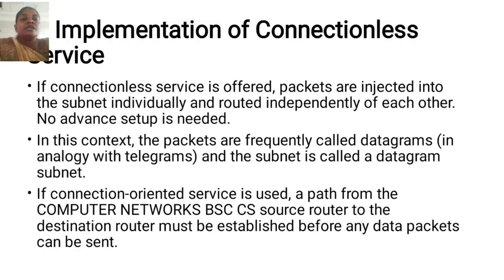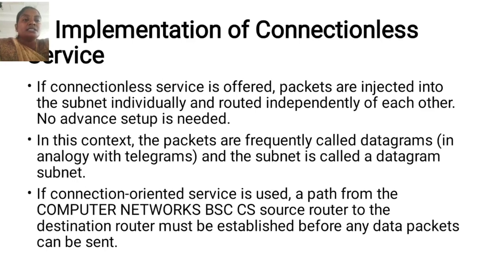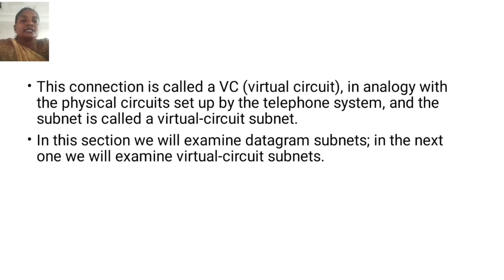Implementation of connectionless service: if connectionless service is offered, packets are injected into the subnet individually and routed independently of each other. No advanced setup is needed. In this context, the packets are frequently called datagrams, in analogy with telegrams, and the subnet is called a datagram subnet. If connection-oriented service is used, a path from the source router to the destination router must be established before any data packets can be sent. This connection is called a virtual circuit, in analogy with the physical circuit set up by the telephone system, and the subnet is called a virtual circuit subnet. We will examine datagram subnets now and virtual circuit subnets next.